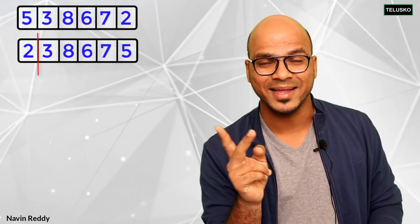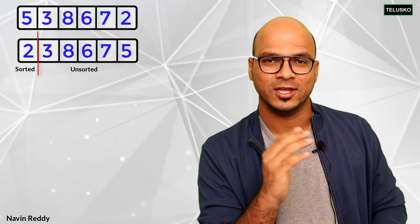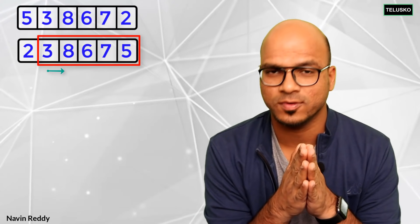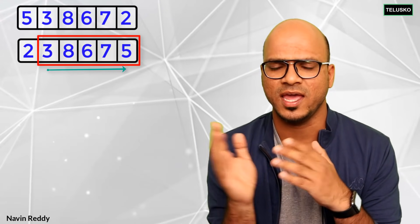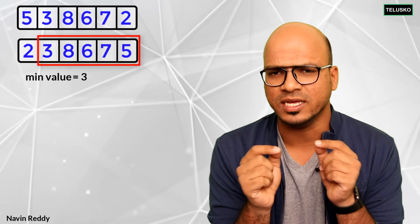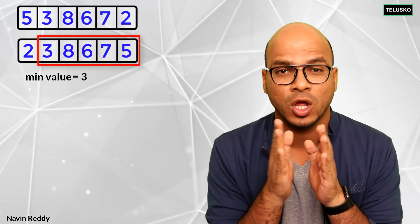Now you swap 5 with 2, so 2 goes to the first position. After the first iteration, 2 is fixed. We are now building two arrays — a sorted array and an unsorted array. 2 becomes part of the sorted array. From the remaining elements, you again find the min value, which is 3, and swap it into place. In each iteration we are doing swapping only once.